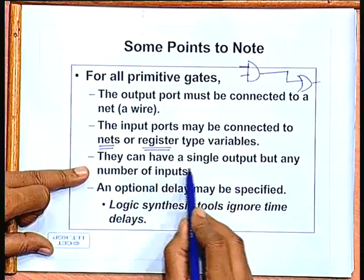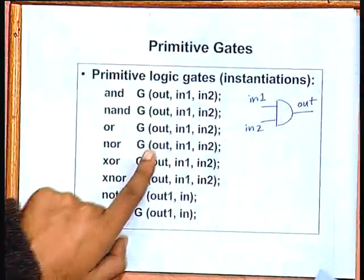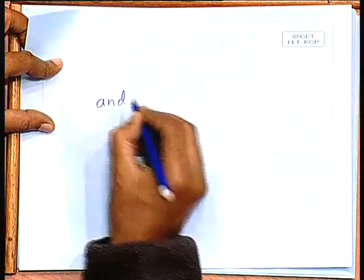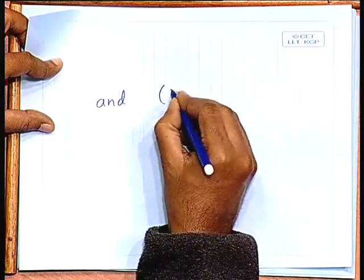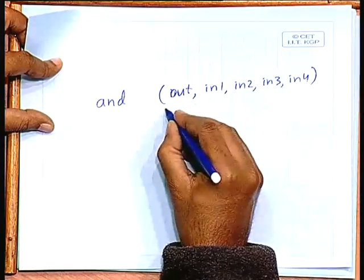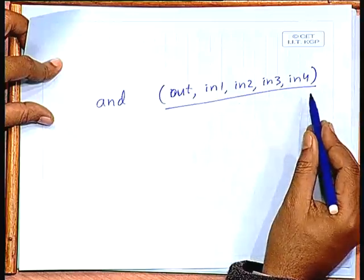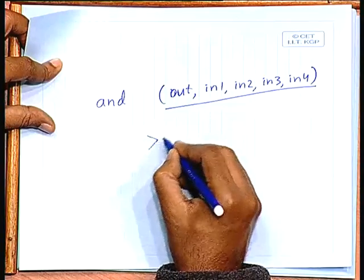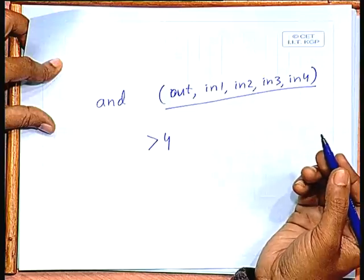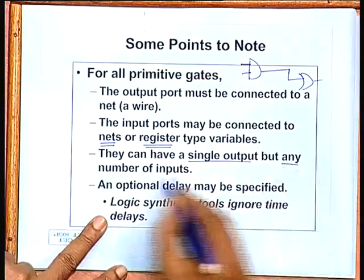Primitive gates have a single output but can have any number of inputs. In the examples we have seen gates with two inputs, but you can declare, say, an AND gate with four inputs. Verilog does not restrict the number of inputs. However, to be realistic, you should limit the fan-in — typically we do not use gate fan-in greater than four, because greater fan-in increases gate delay.